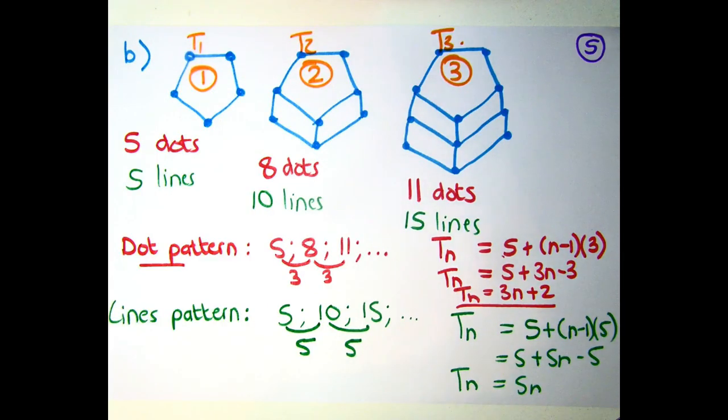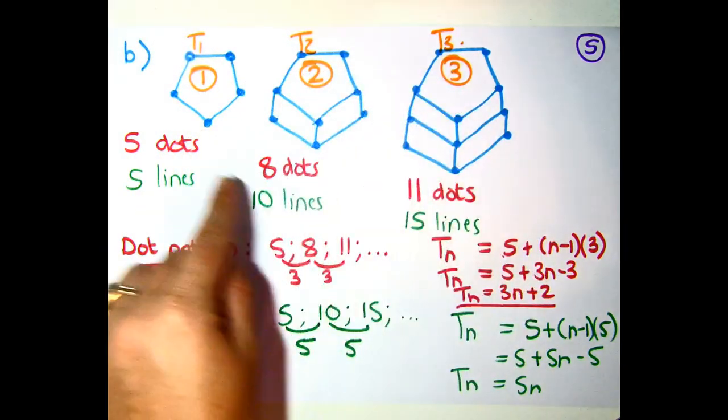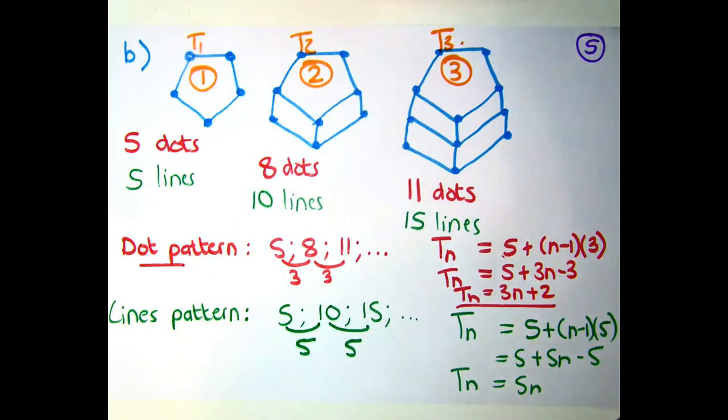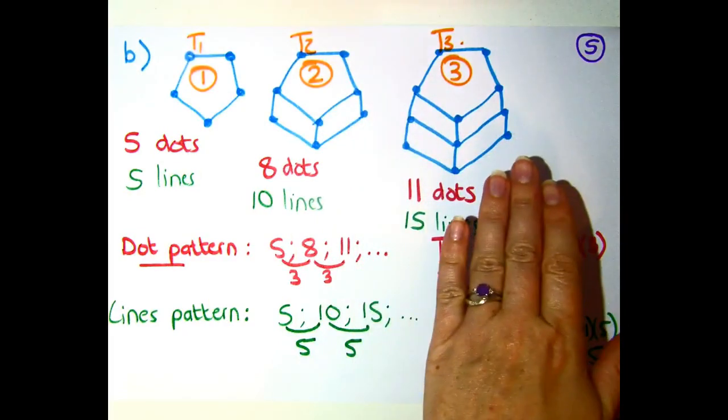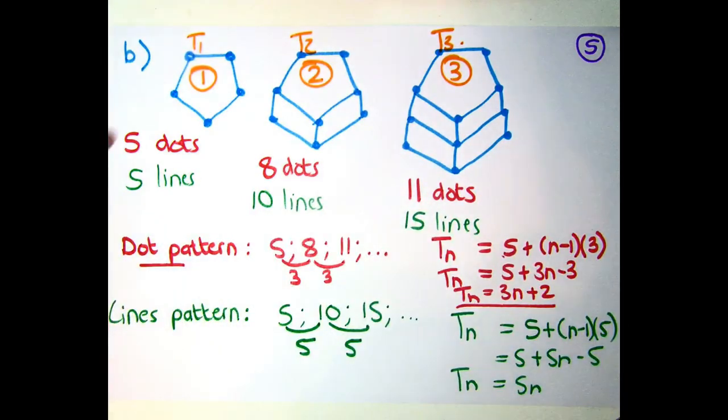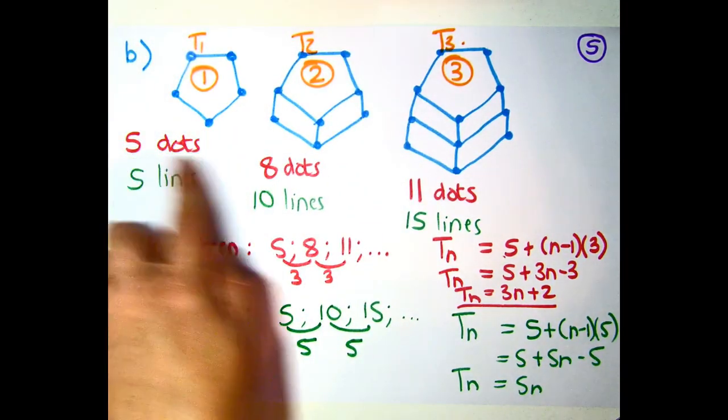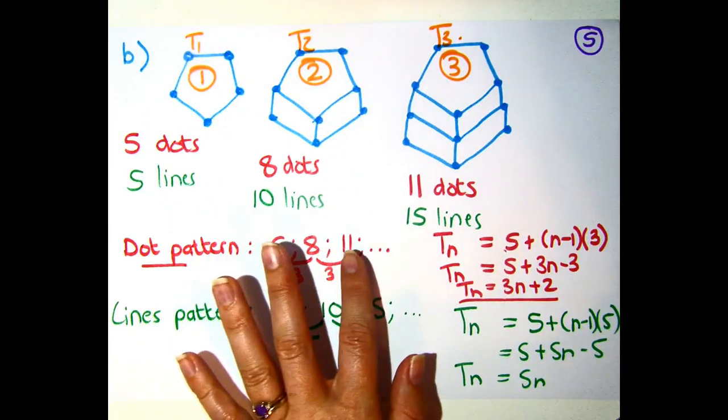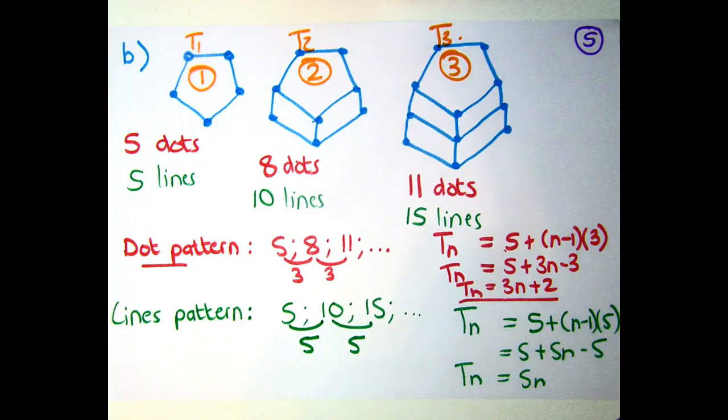When you get given an example that has pictures, what you've got to be able to do is to recognize that that is T1, T2, T3, and then you need to write down whatever kinds of things they are. It could be black squares, white squares, circles, triangles, whatever the kinds of things that are in the diagram, the shapes that are there. You need to make sure you extract them and write them down so that you can transfer, for example, my 5, 8 and 11 dots into another pattern that is 5, 8, 11. Once it's in that format, it's exactly the same as every other kind of number pattern.